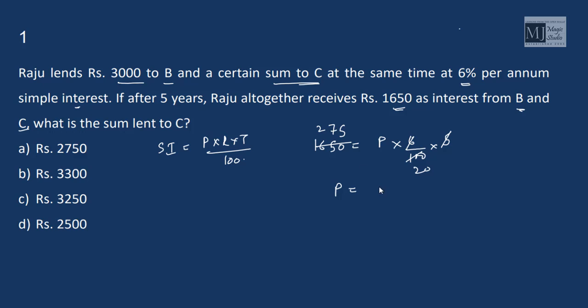Calculating, P is 5500. So amount lent to C is 5500 minus 3000 that is 2500.